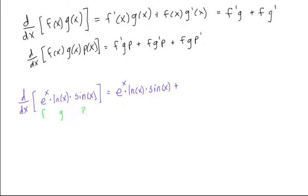Now f doesn't change, but in this case, we're not taking the derivative of e to the x, we're going to take the derivative of ln of x, which is times 1 over x, times, just p, not the derivative of it, times sin of x.